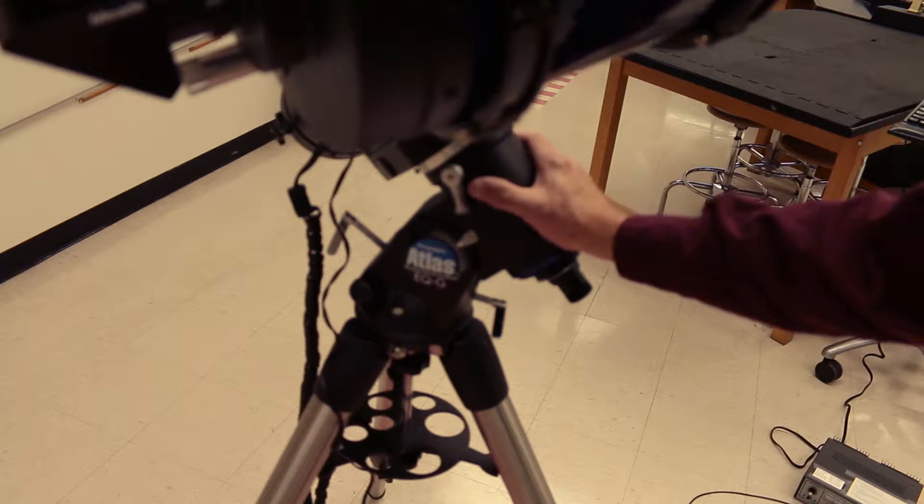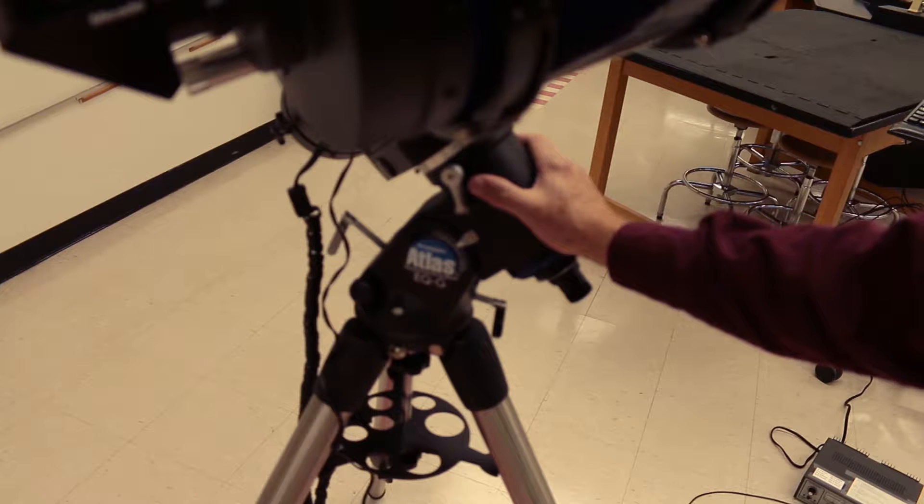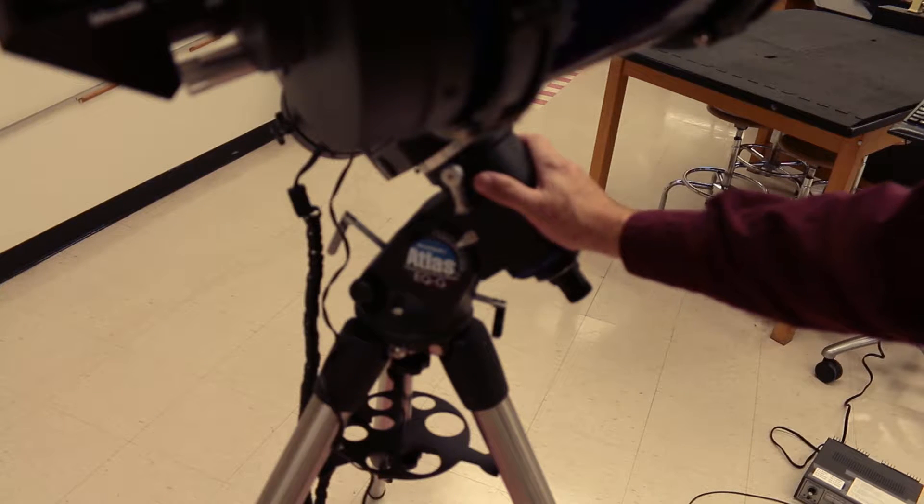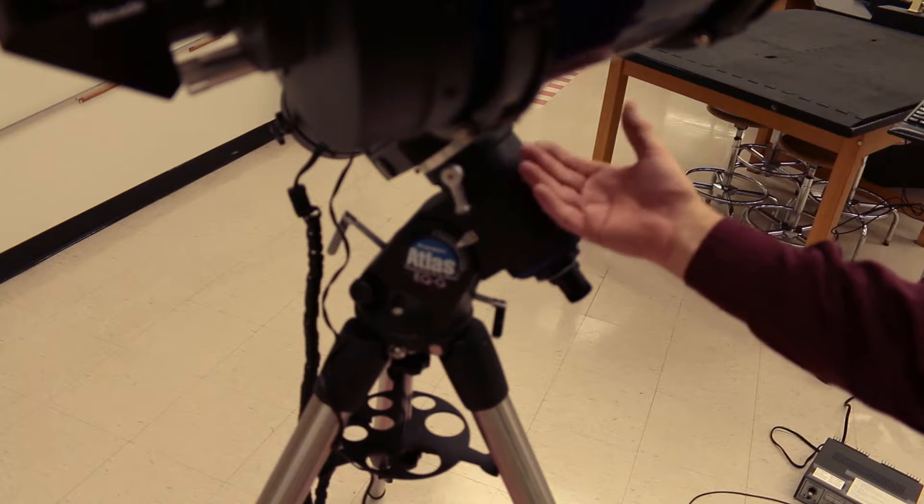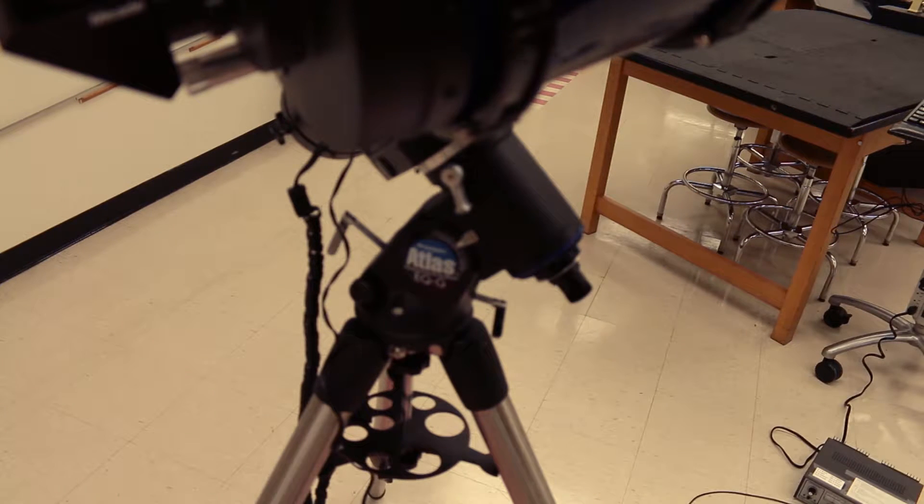If you're going to get a telescope, you really do need one that tracks like that. This old type of German equatorial mount is an equatorial mount. It's parallel to the Earth's equator. That's what you need in order to take long exposure photographs.